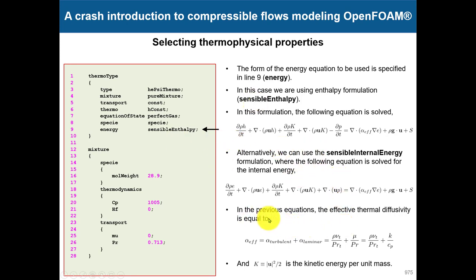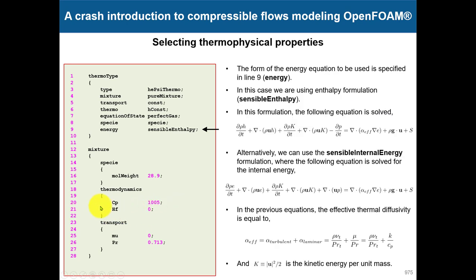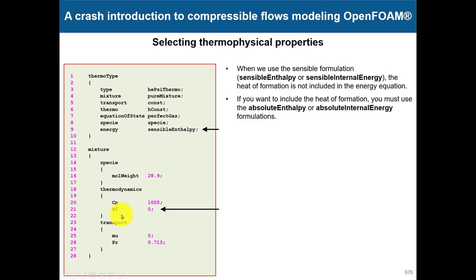The effective thermal diffusivity is computed combining the turbulence model contribution and the molecular one — involving turbulent Prandtl number, turbulent viscosity, and so on. Besides sensible enthalpy and sensible internal energy, you also have absolute enthalpy and absolute internal energy formulations, which allow you to include the heat of formation — useful when accounting for phase change and related effects.